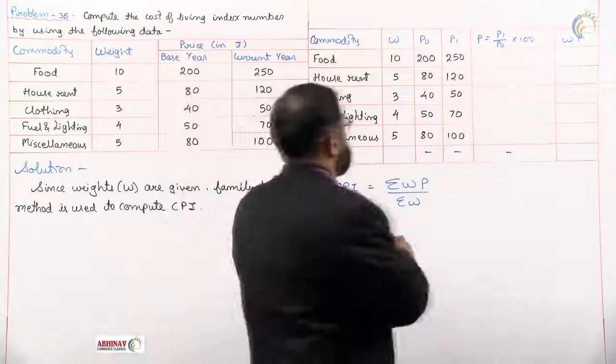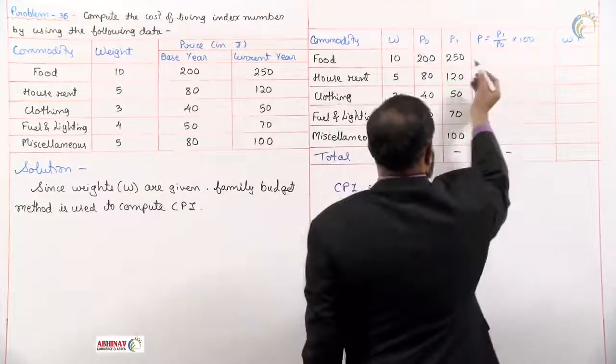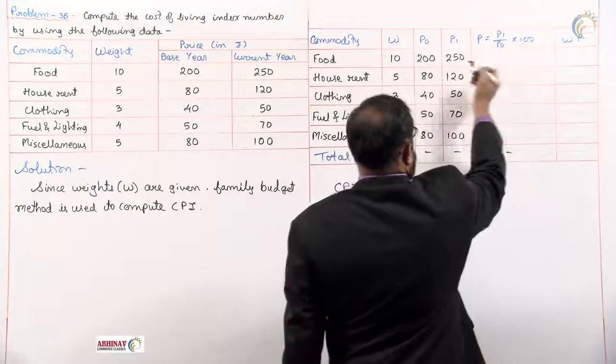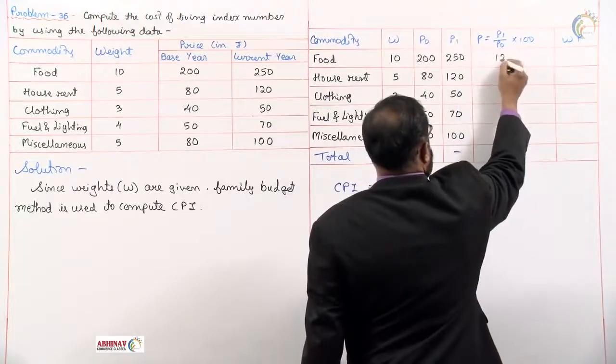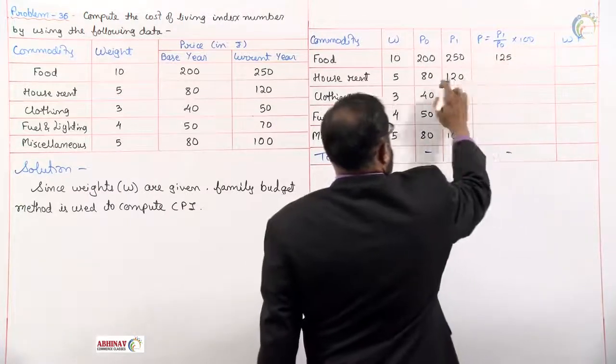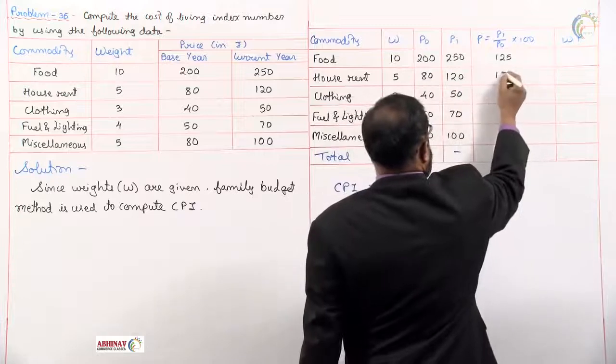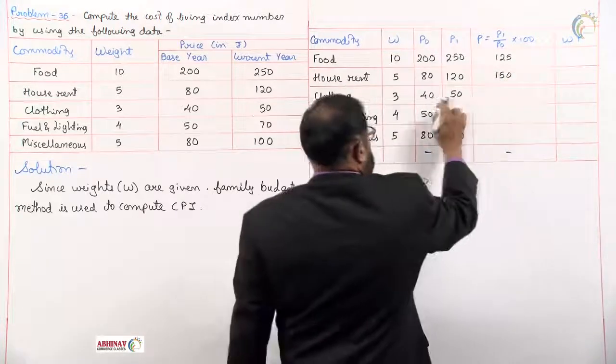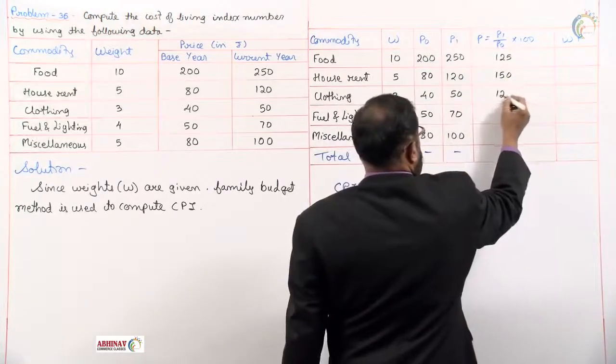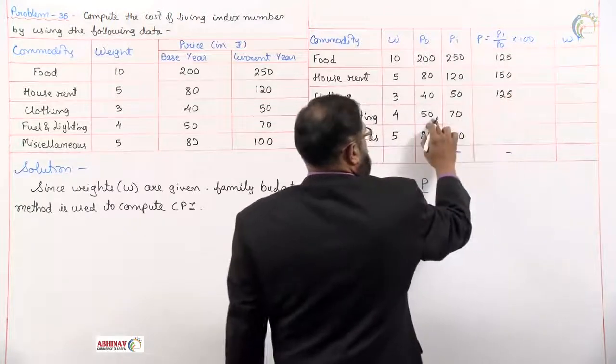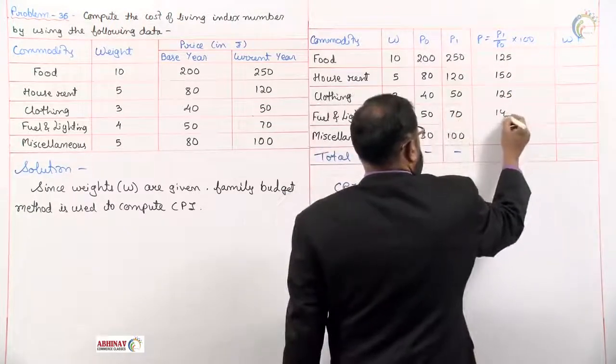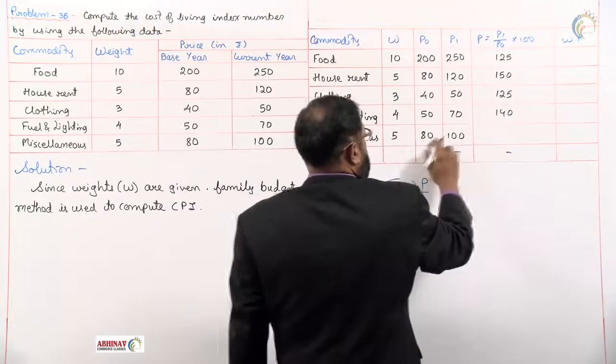Let us first calculate the price relative which is p1 upon p naught times 100. 250 upon 200 is 125, 120 upon 80 is 150, 50 upon 40 is 125, 70 upon 50 is 140, 100 upon 80 is 125.